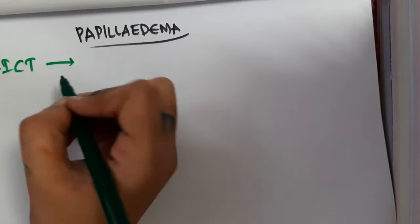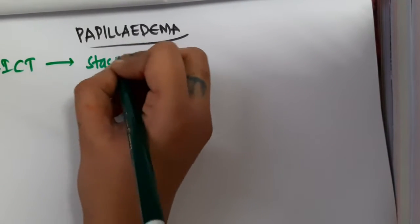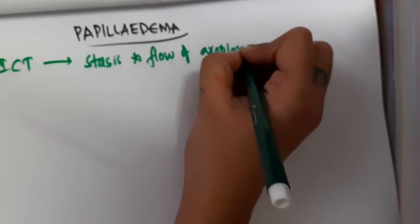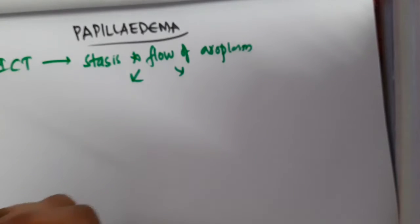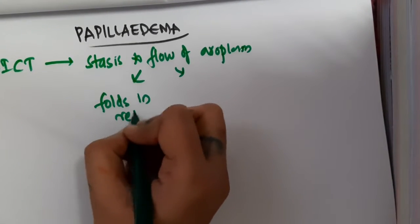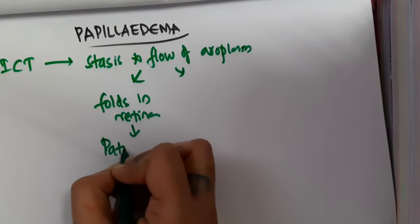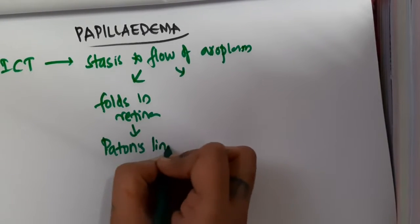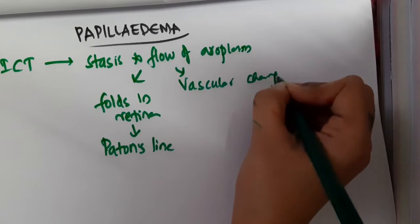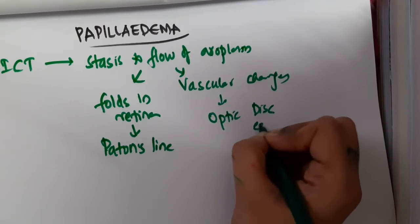Whenever there is increased intracranial tension, there will be stasis to the flow of axoplasm. This stasis causes two changes: first, it causes folds in the retina, which are the mechanical changes seen — these folds are called Paton's lines. Second, vascular changes are seen, which cause optic disc edema.